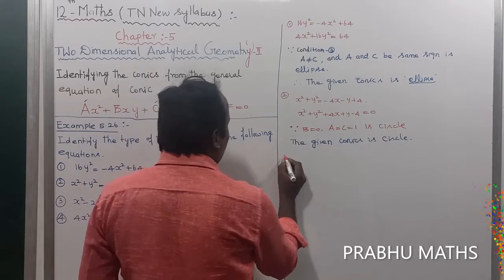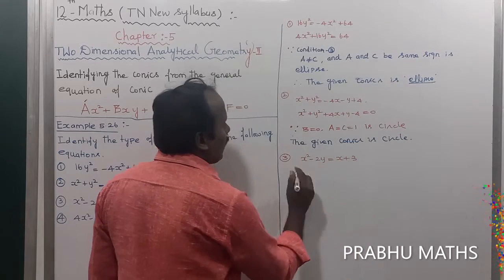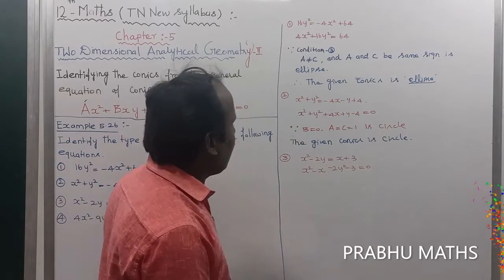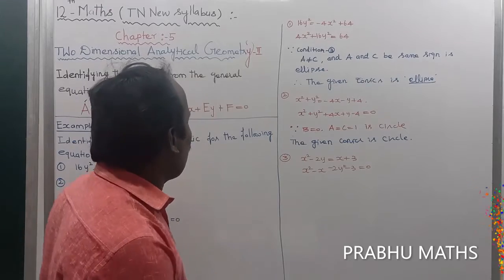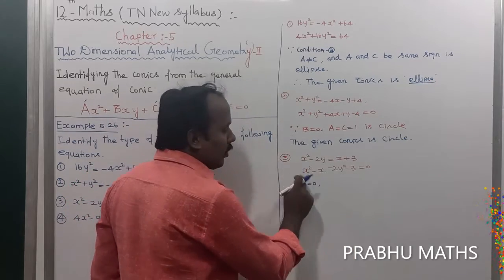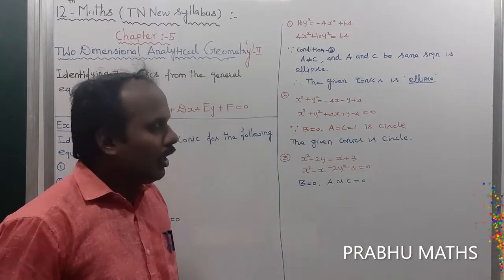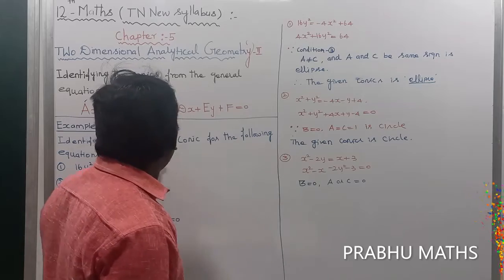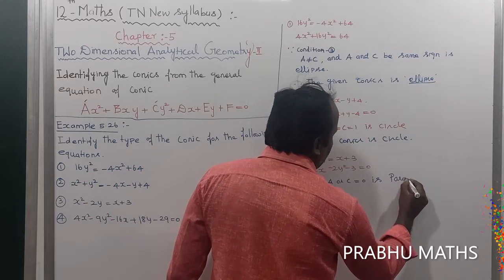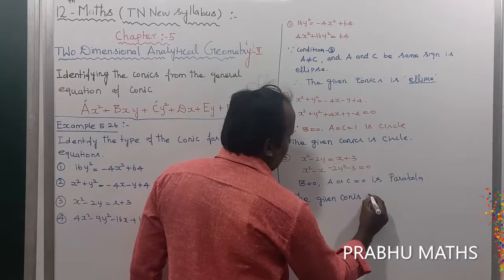The third subdivision: x² - 2y = x + 3. Rearranging, we get x² - x - 2y - 3 = 0. The condition here is b = 0 — there is no xy term. Also, a or c equals 0: the x² term is present but there is no y² term. When only one of a or c is zero, the conic is called a parabola. Therefore, the given conic is a parabola.